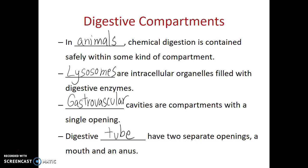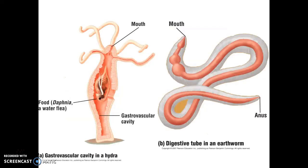Digestive tubes have two separate openings — a mouth and an anus that are distinct from each other. Here we see examples of organisms with these two different types of digestive compartments. The hydra, a freshwater cnidarian, has a gastrovascular cavity, so its one opening functions both as a mouth and an anus. Hydra don't have taste buds in the same way we do, so it's not quite as disturbing a concept for them. When we look at something with a digestive tube, even something as simple as an earthworm, we see that there are two different ends to their digestive compartment.